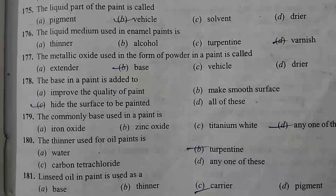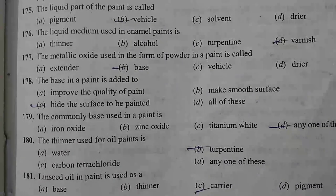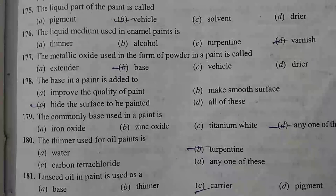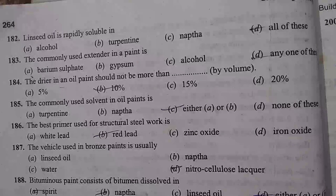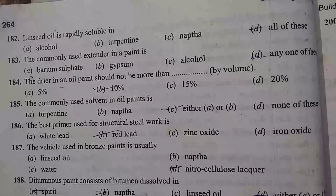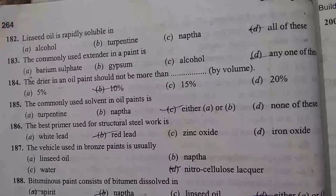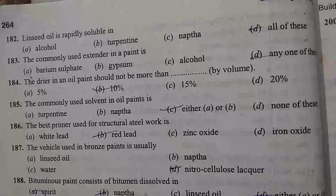The metallic oxide used in the form of powder in a paint is called the base. The base in paint is added to hide the surface to be painted. The commonly used bases in paint are iron oxide, zinc oxide, and titanium dioxide. The thinner used for oil paint is turpentine. Linseed oil in paint is used as a carrier.